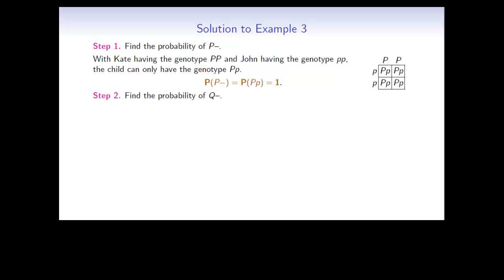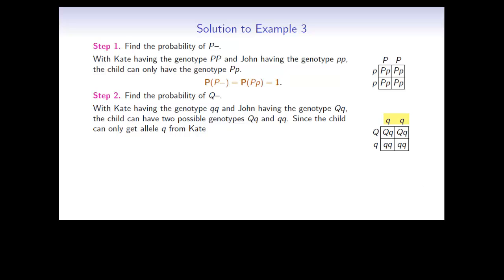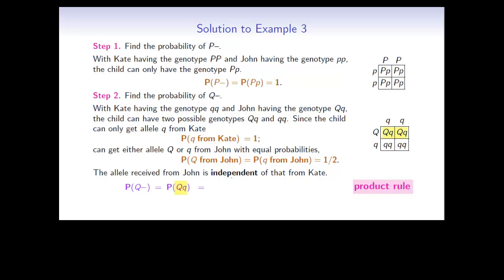Now let's have a look at the probability for Q-dash. Kate has genotype small q, small q, and John has genotype big Q, small q. Filling out the different possibilities in a Punnett square, there are two different possibilities. Since the child can only get small q from Kate, the probability of that is 1, or 100%. However, from John, it could get a big Q or a small q with equal probabilities, so each has probability a half. The allele received from John is independent of that received from Kate, so we use the product rule. The probability of big Q, small q is the probability of small q from Kate multiplied by the probability of big Q from John — 1 multiplied by a half, which is equal to a half.